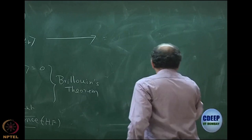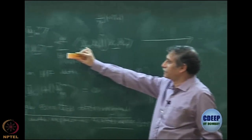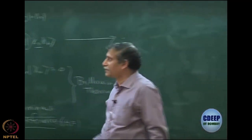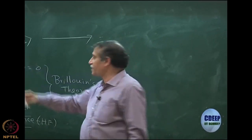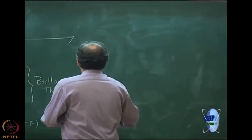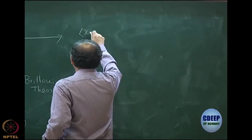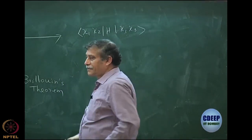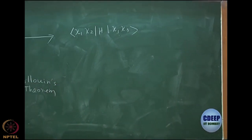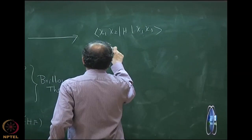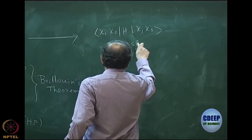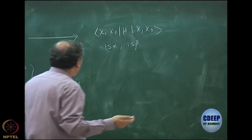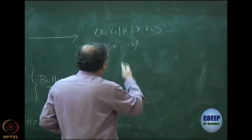Let us do a practice. Take a 2-electron system with spin orbitals χ₁ = 1s α, χ₂ = 1s β, and χ₃ = 2s α. I want to calculate ⟨χ₁ χ₂|H|χ₁' χ₂⟩ where χ₁ is replaced by 2s α. This is like a helium ground-state determinant with an excited determinant where 1s α has been replaced by 2s α. Apply the Slater rule.